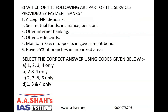Question number 8. Which of the following are part of the services provided by payment banks? Number 1: Accept NRI deposits. Number 2: Sell mutual funds, insurance or pensions. Number 3: Offer internet banking. Number 4: Offer credit cards. Number 5: Maintain 75% of deposits in government bonds. Number 6: Have 25% of branches in unbanked areas. Select the correct answer: A: 1, 2, 3, 4 only. B: 2 and 4 only. C: 2, 3, 5, 6 only. D: 1, 3 and 4 only. The correct answer is C, 2, 3, 5, 6 only.